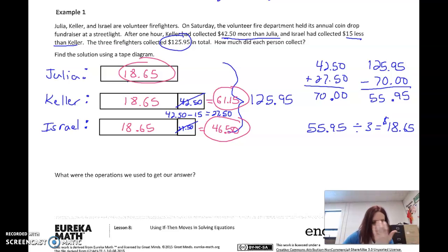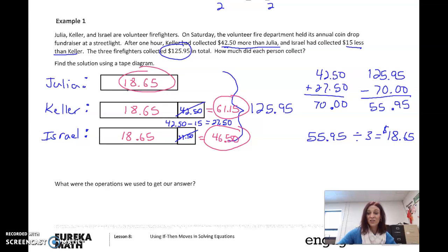What operations were used to get their answer? Well, notice what we had to do. We added here, we subtracted, we divided. So what operations do we use? We use all of them. Because we were adding this amount on, we subtracted. Because there's three of them, we divide it.